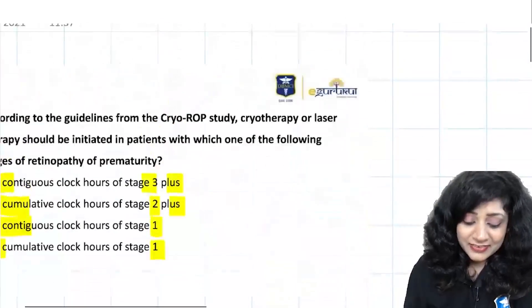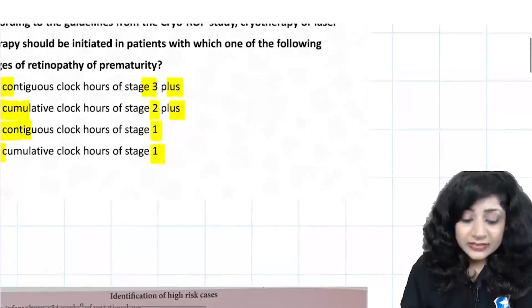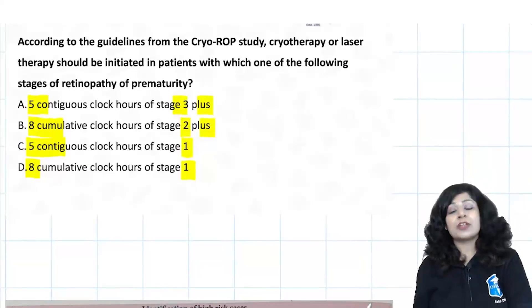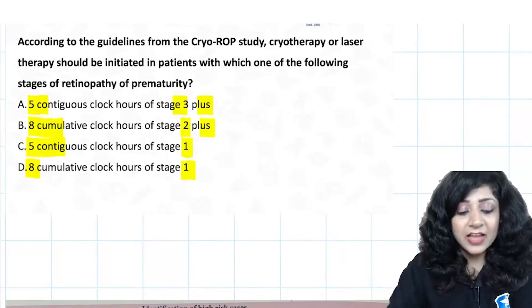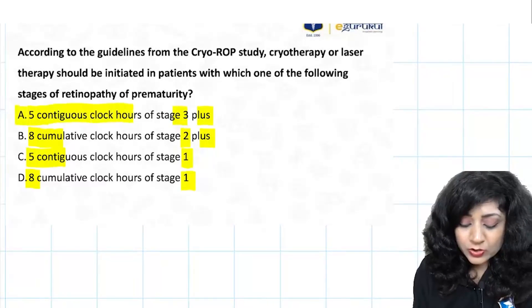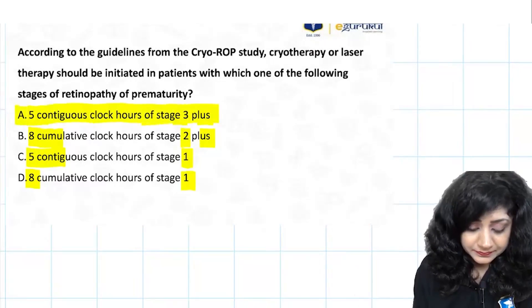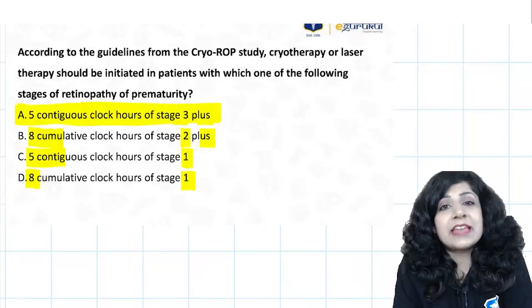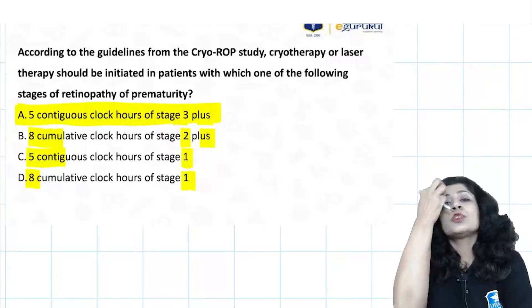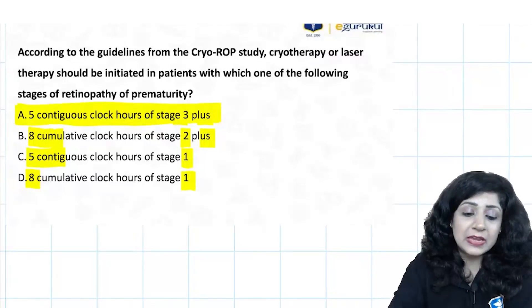Now the answer is very clear. Once you've done with this, you won't take much time to give the answer. So our answer is option A: 5 contiguous clock hours, stage 3 and plus. Is that clear to everyone? I've explained the stages, zones, extent, and also the plus disease. You're also knowing about threshold and pre-threshold.